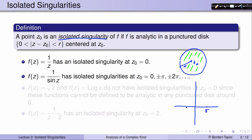The sin function is 0 at pi, minus pi, 2pi, minus 2pi, and so forth. So this function has lots of isolated singularities. It has one at 0, and I can draw a disk around 0 so that 0 is a singularity but the function is analytic everywhere else in that disk. Or I could draw a disk around 2pi, and the function is analytic everywhere in that disk except at 2pi. So 1 over sin(z) has isolated singularities at 0, plus or minus pi, plus or minus 2pi, and so forth.